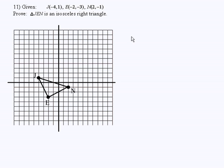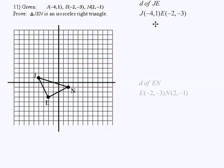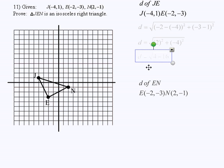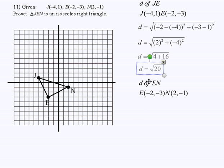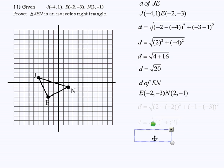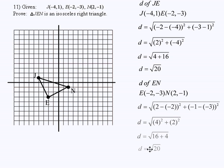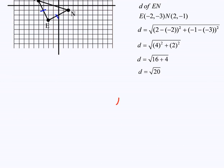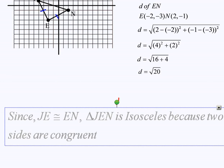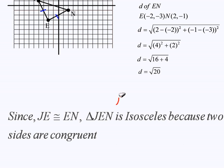Let's begin with the isosceles part. I'm going to find the distance of JE and the distance of EN. The distance of JE is √20, and the distance of EN is also √20. So that tells me that JE and EN are congruent. Since JE is congruent to EN, triangle JEN is isosceles because two sides are congruent.